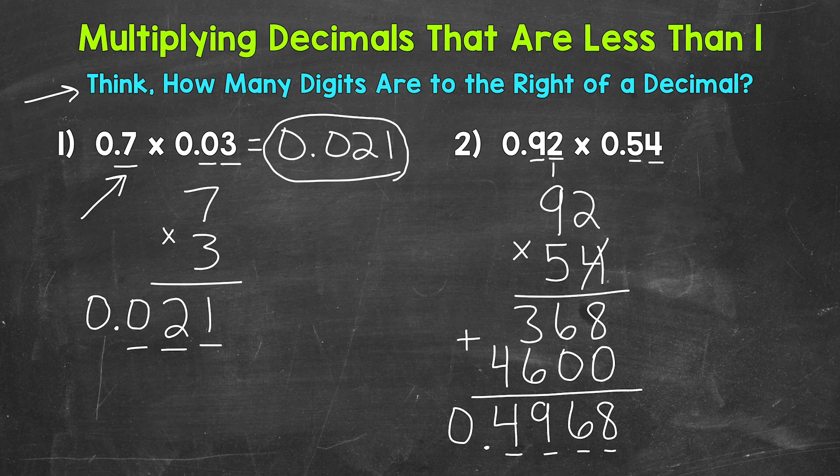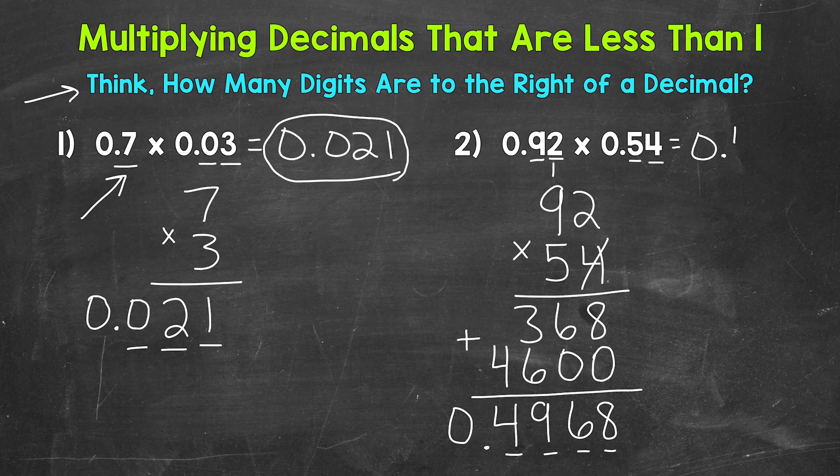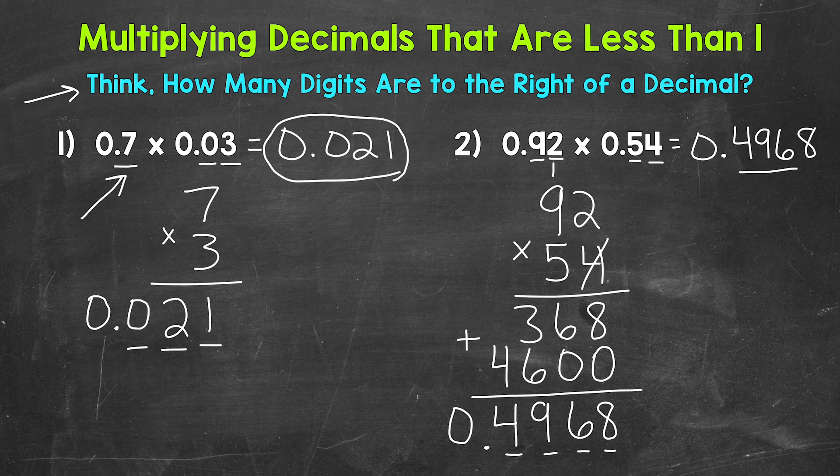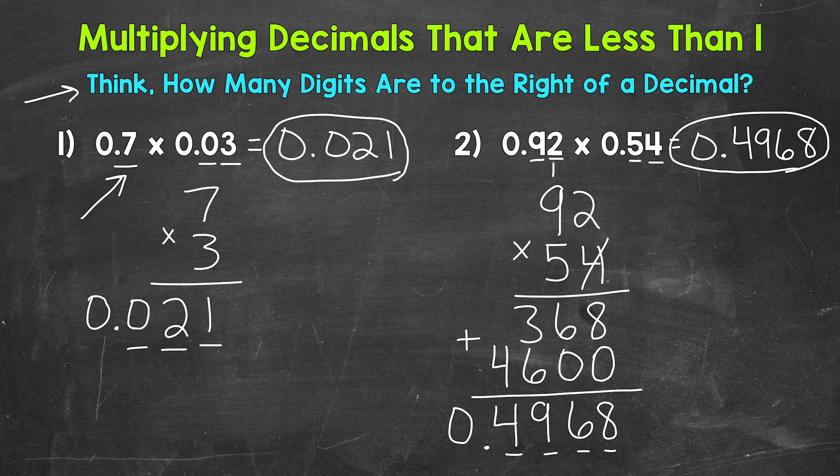I'll put a 0 in the ones place to show that we do not have any whole numbers. Our final answer, 4,968 ten thousandths. So there you have it. There's how you multiply two decimals that are less than one whole.